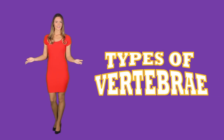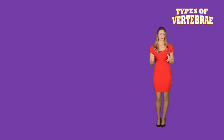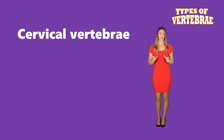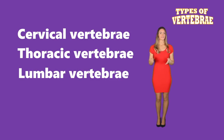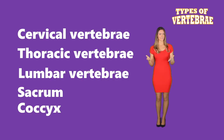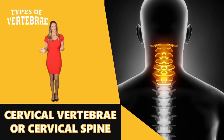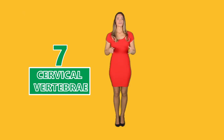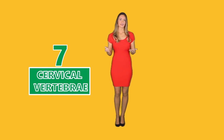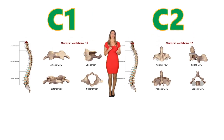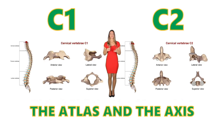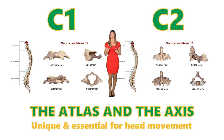Types of vertebrae. The spinal column is composed of the cervical vertebrae, the thoracic vertebrae, the lumbar vertebrae, the sacrum, and the coccyx. The cervical vertebrae, or cervical spine: there are seven cervical vertebrae in the body. They are known as C1 through C7. Among the seven cervical vertebrae, C1 and C2 are called the atlas and the axis. They are unique and essential for head movement.